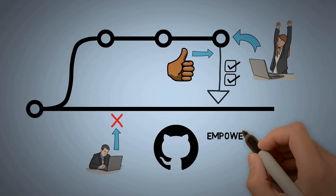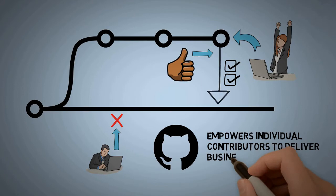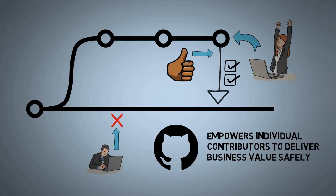Part of the reason GitHub's pull request system has been so successful is it empowers individual contributors to deliver business value safely, rather than creating bottlenecks by requesting manager, security or operations approval to make the change to the code base.